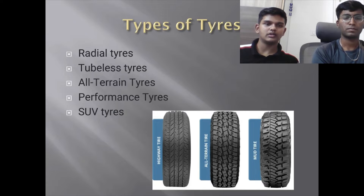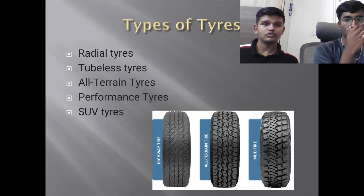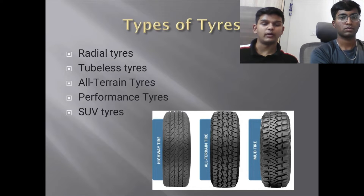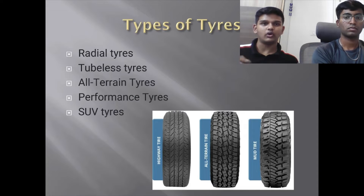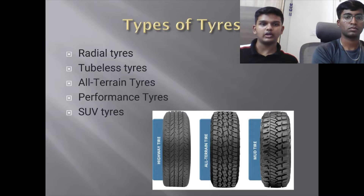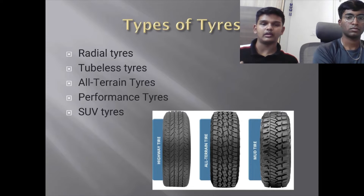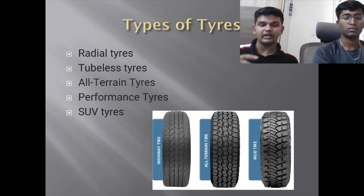The types of tyres depend completely on the requirements of the user. Types of tyres include radial tyres, tubeless tyres, all-terrain tyres, performance tyres, and SUV tyres. Conventionally, tyres with tubes were used, but now they are mostly tubeless. All-terrain, performance, and SUV tyres require a lot more traction, while normal tyres are designed to give high mileage.